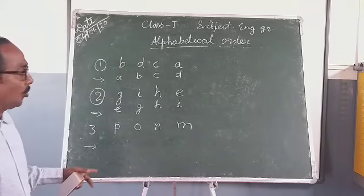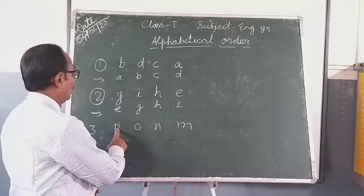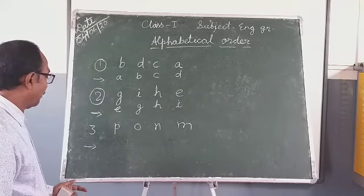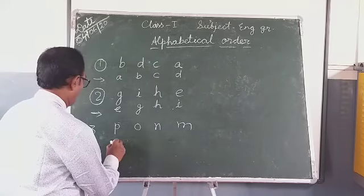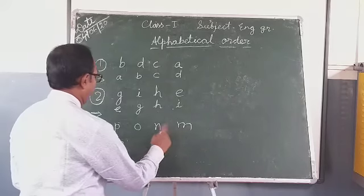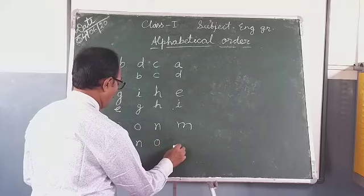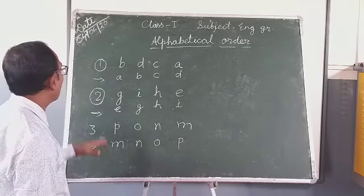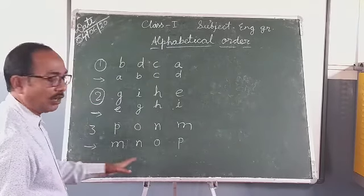Now we will see the third number. P, O, N, M. What? First I will write M, that after N, that after O, then P. Now we have arranged them in according to ABCD.